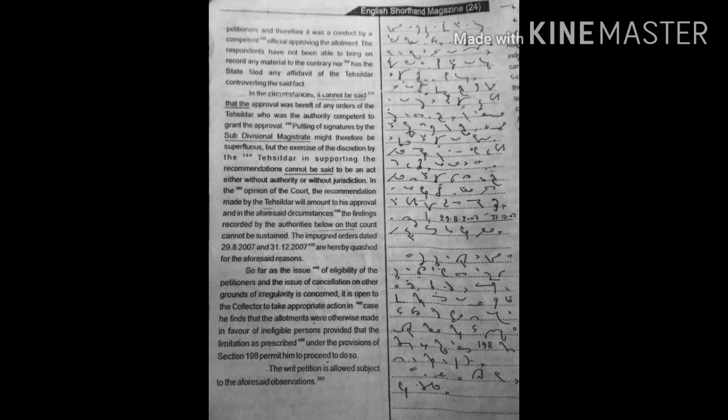So far as the issue of eligibility of the petitioner and the issue of cancellation on other grounds of irregularity is concerned, it is open to collector to take appropriate action in case he find that the allotments were otherwise made in favour of ineligible person.